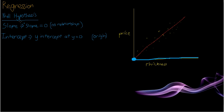Because you can see here, slope is equal to 0, no relationship. So if there was a relationship, as there is, as thickness increases, the price will increase.